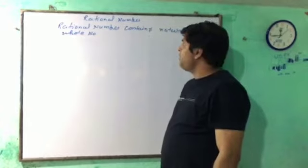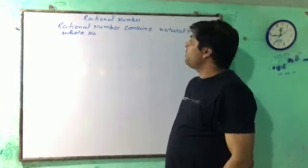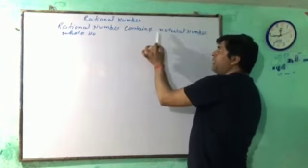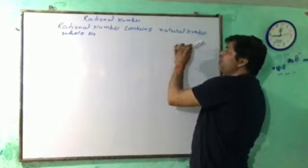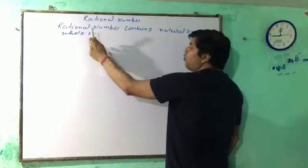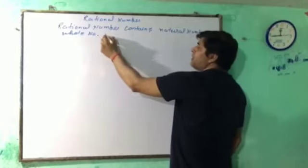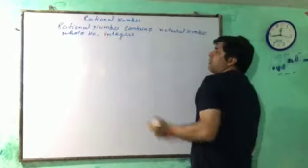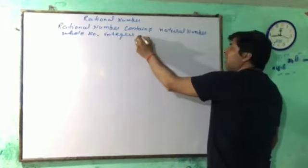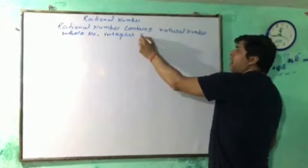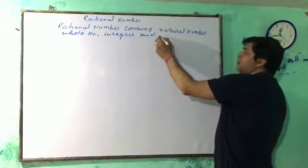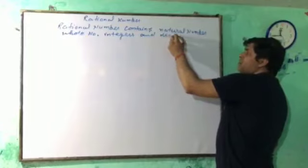Again, we will see here that rational numbers contain natural numbers, integers, and decimal numbers.